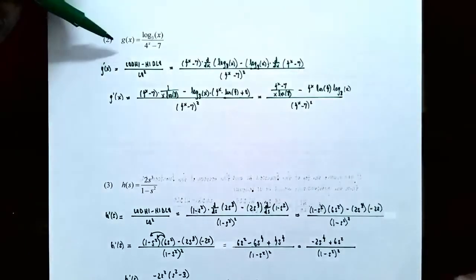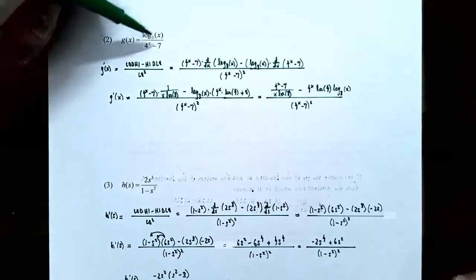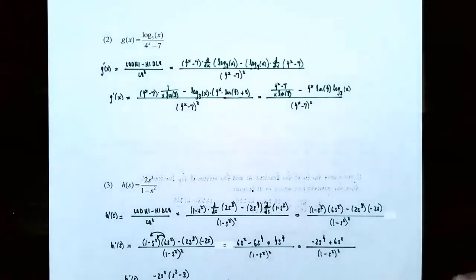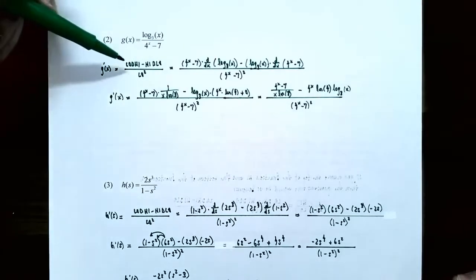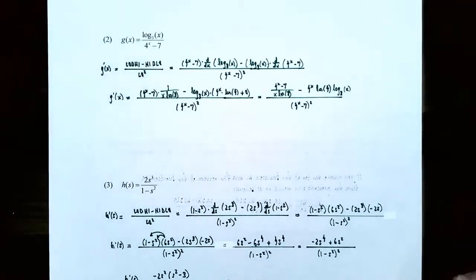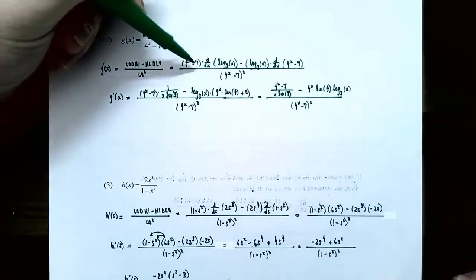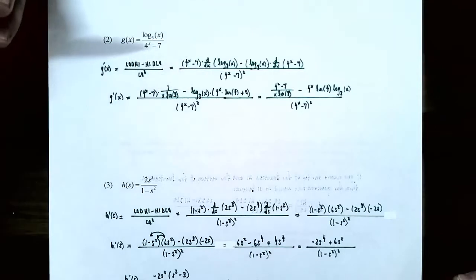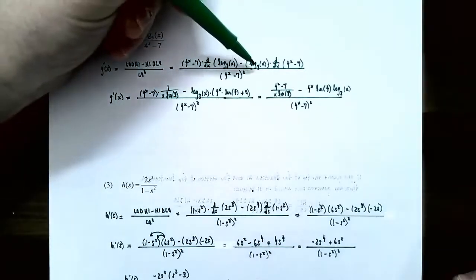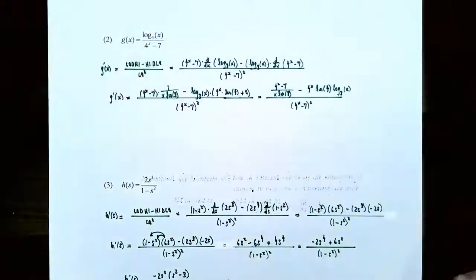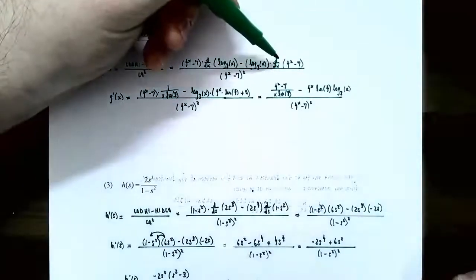Number two: the function g of x equals log base 3 of x in the numerator, and 4 to the x power minus 7 in the denominator. Since this is a fraction of two different functions, we use the quotient rule. So g prime of x is low d high minus high d low all over low squared. Plugging in: low is 4 to the x minus 7, times d/dx of log base 3 of x, subtract log base 3 of x times the derivative of 4 to the x minus 7.